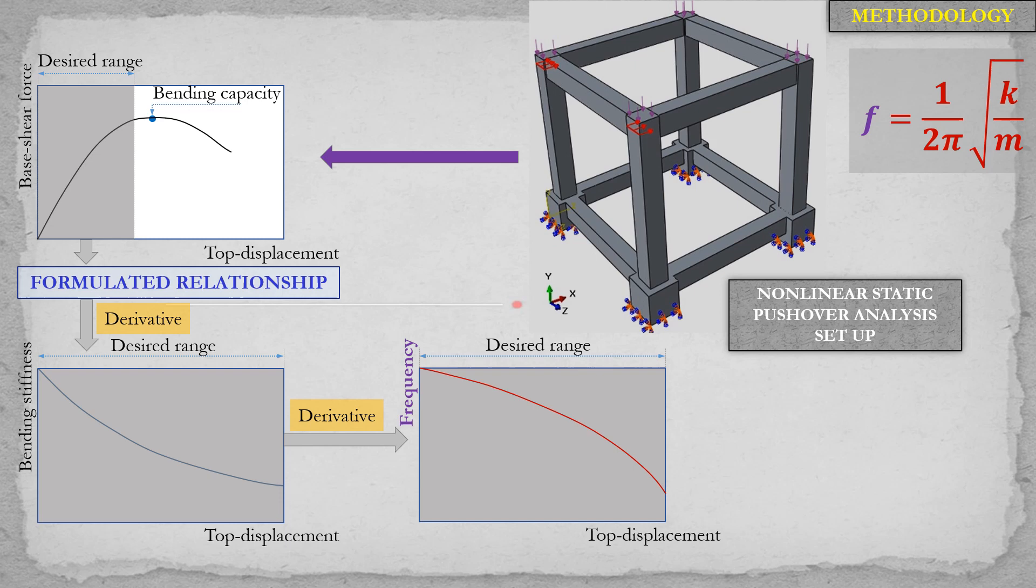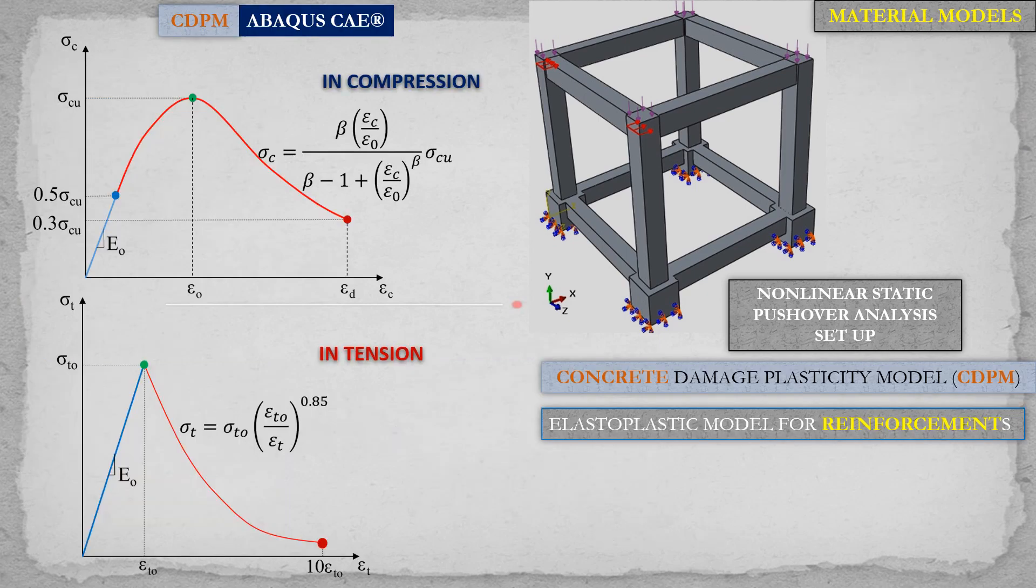After that, the relationship will be formulated and the first derivative of this equation will give us information about the stiffness degradation. From that, we can determine the frequency degradation by taking the second derivative of this equation.